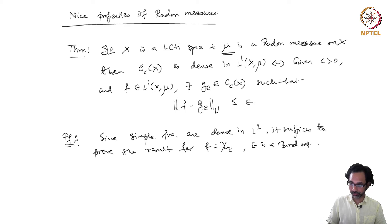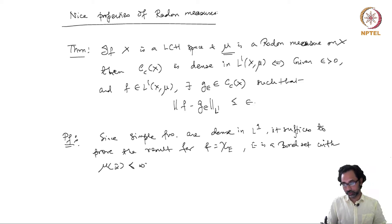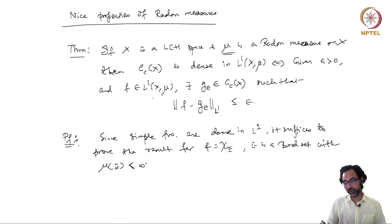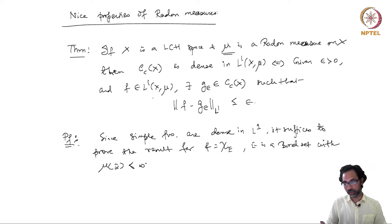So mu(E) is finite. If we can prove this for indicator functions of Borel sets with finite measure, then we can easily do it for any general L1 function by first taking finite linear combinations of simple functions and then approximating in the L1 norm by simple functions.